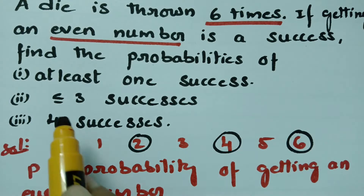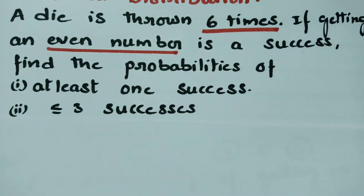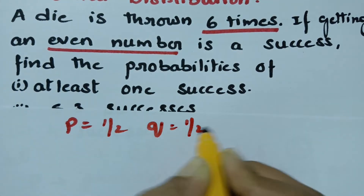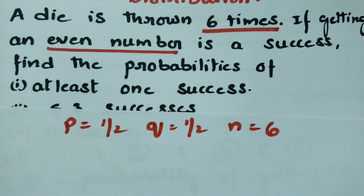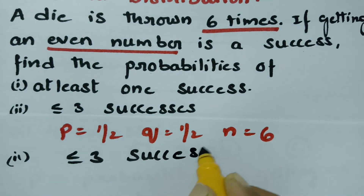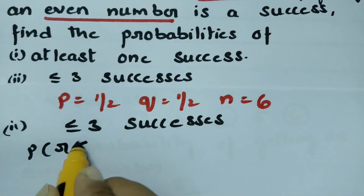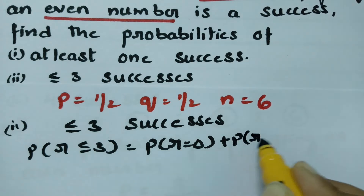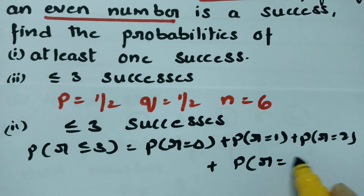The next question is less than or equal to 3 successes. P is equal to 1/2, Q is equal to 1/2, and N is equal to 6. For P(R ≤ 3), we compute P(R=0) + P(R=1) + P(R=2) + P(R=3).